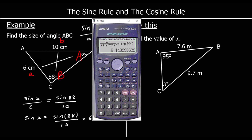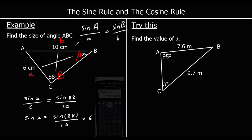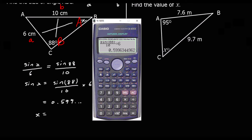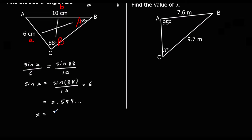We type that into the calculator: sine 88 over 10 times 6 — so that's 0.599 and so on. So sine x equals 0.599 and so on. But we don't want sine x, we want x. To get sine away from x, we use shift sine. So on our calculator, shift sine the answer — and that's 36.84 degrees to two decimal places.